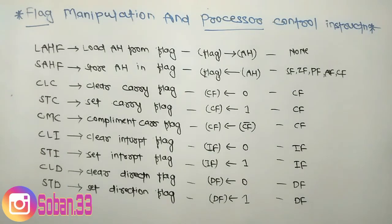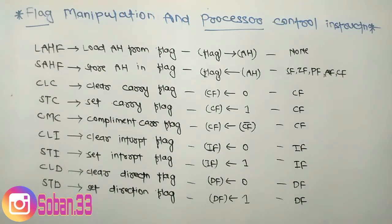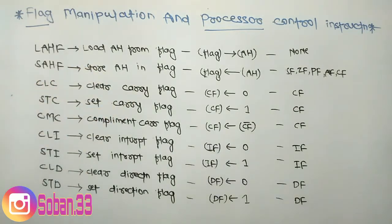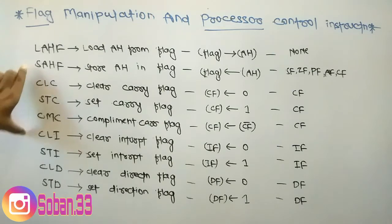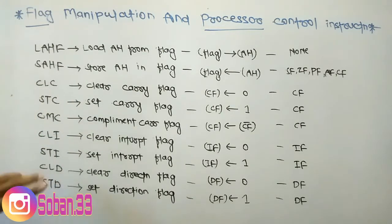Hello friends. In this video we are going to learn about Flag Manipulation Instructions. There are around 9 types of Flag Manipulation Instructions, which we can use to control the flags. We can modify some flags using these instructions. The instructions are: LAHF, SAHF, CLC, STC, CMC, CLI, STI, CLD, and STD.